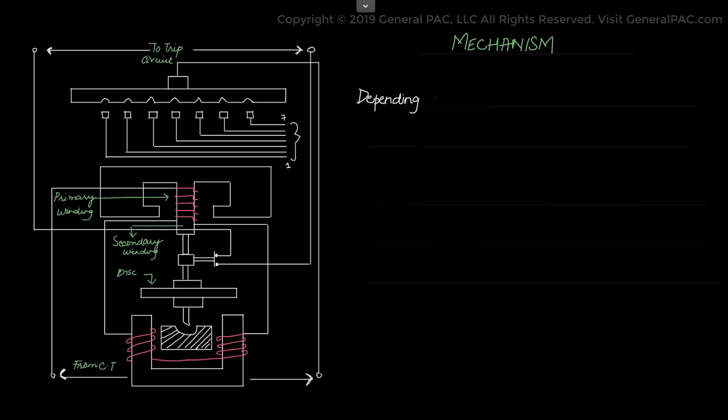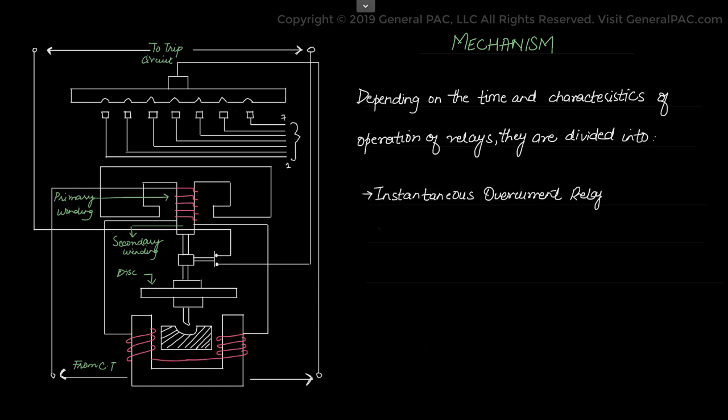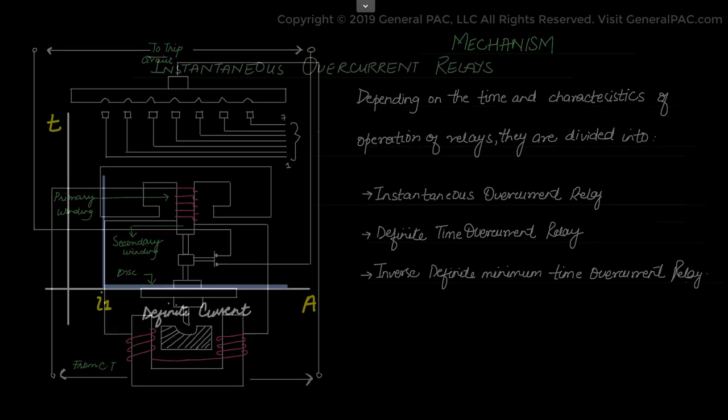Depending on the type and characteristic of the operations of relay, they are placed in three categories. The first category is the instantaneous overcurrent relay. The second category is the definite time overcurrent relay. And the third category is the inverse definite minimum time, the IDMT overcurrent relay.